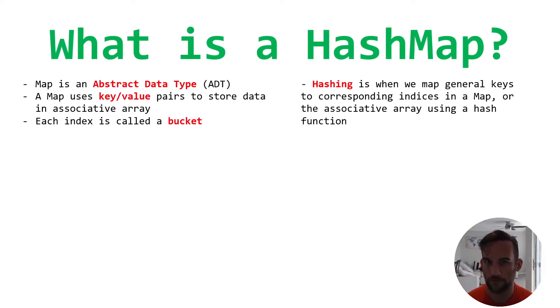So first off, what is a map? Well, a map is just an abstract data type, which basically means it's just an interface that allows for multiple implementations.